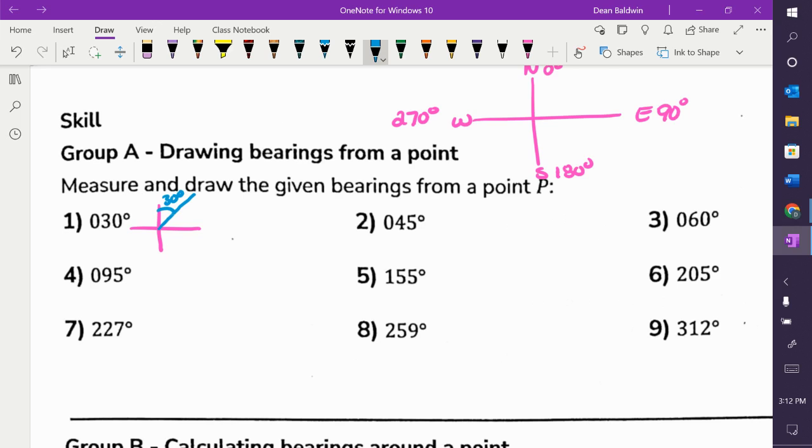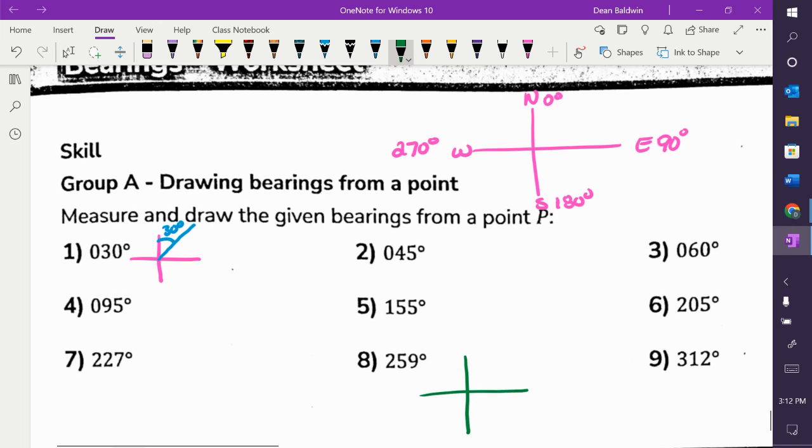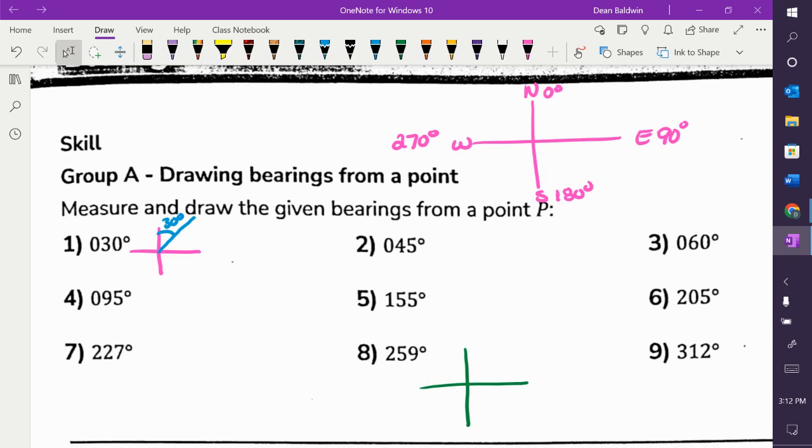Let's do one more. Let's do eight, and then I'll let you do them on your own. So eight, 259. Where am I if we're 259? Third quadrant? So down here, between west and south? Just draw it in the middle. I don't really care if you draw it in the middle.